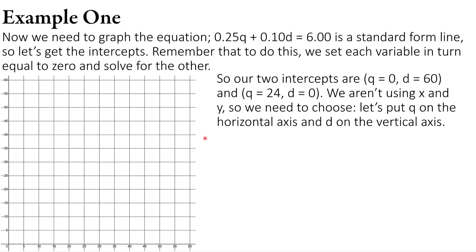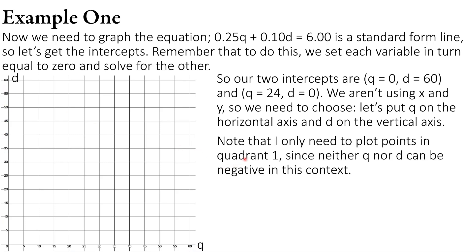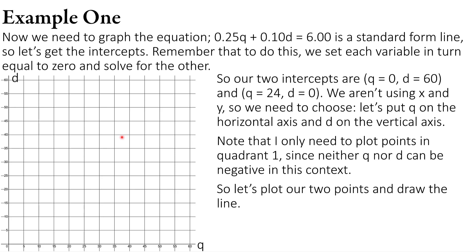Since we're not using x and y, we choose which variable to put on which axis. Since I wrote q first, I'll put q on the horizontal axis and d on the vertical axis. The graph is only in quadrant one where both variables are positive — there are no negative values for d or q since those are just counts of coins. Plotting the two intercept points and connecting them gives the graph of the line.